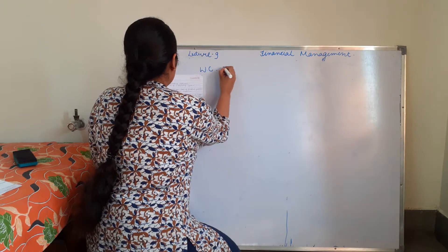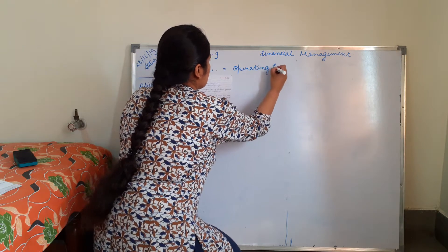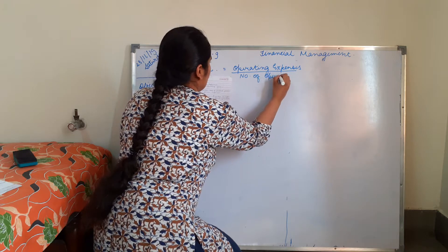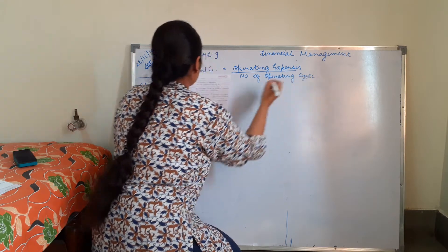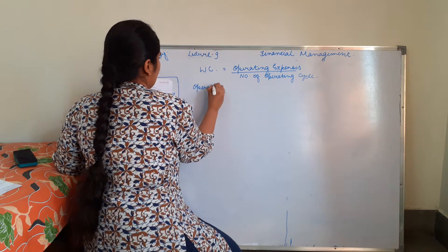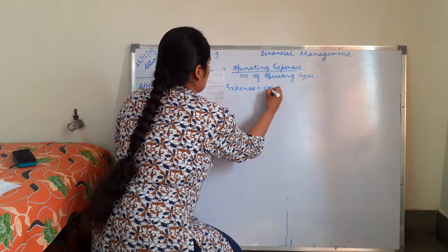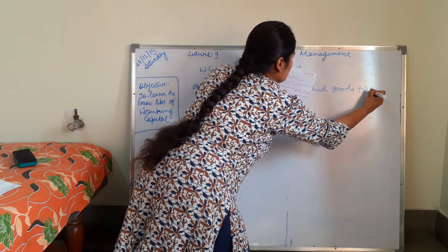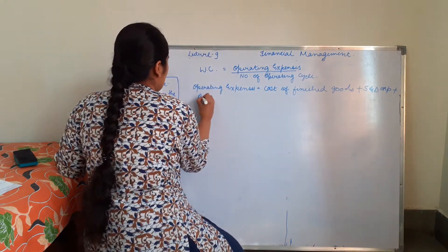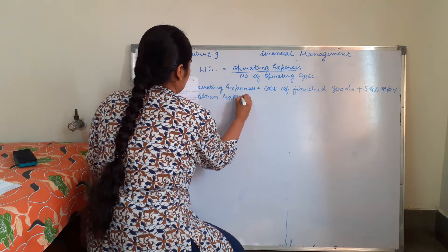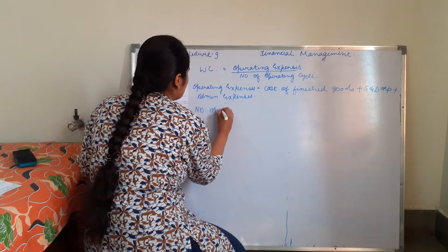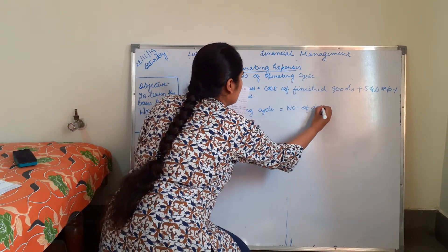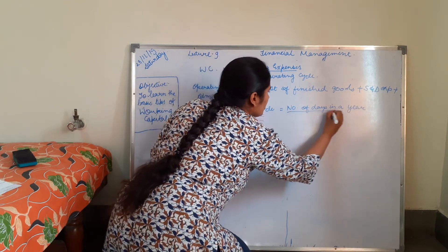Working capital equals operating expenses divided by number of operating cycles. Operating expenses equals cost of finished goods plus sales and distribution expenses plus admin expenses. Number of operating cycles equals number of days in a year divided by operating duration.